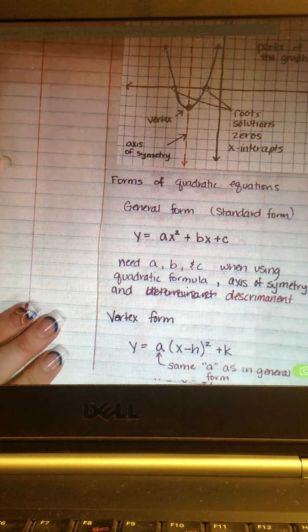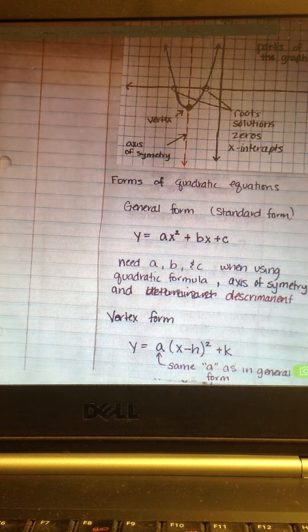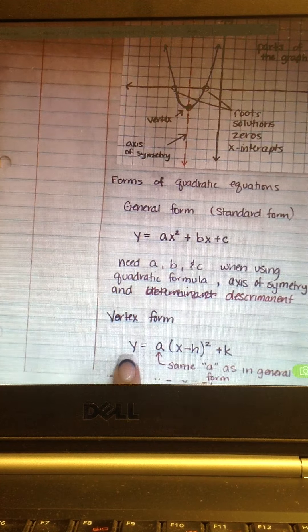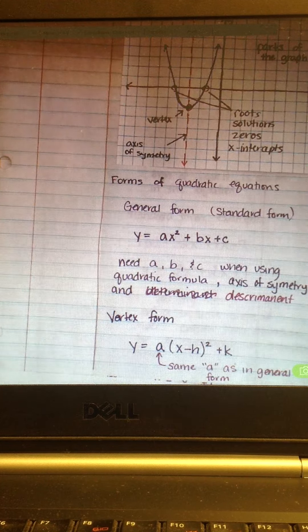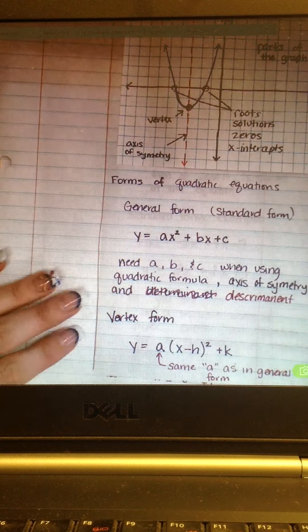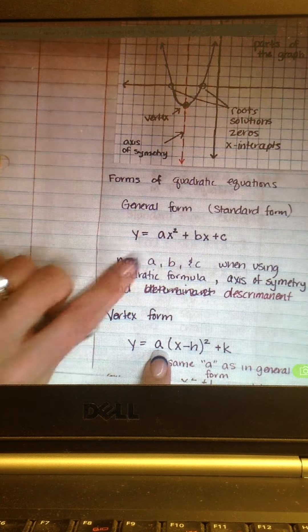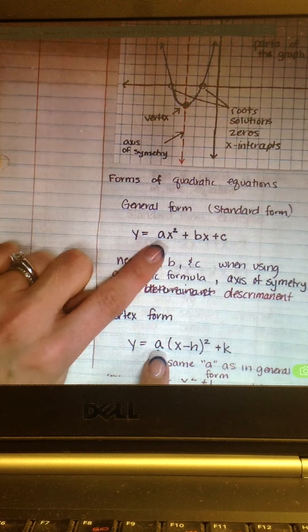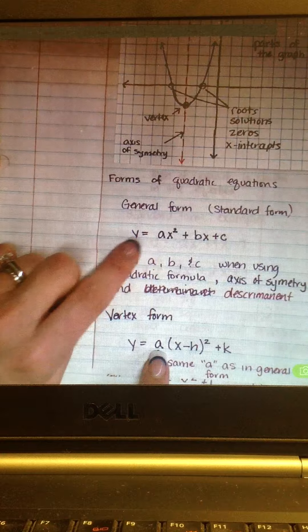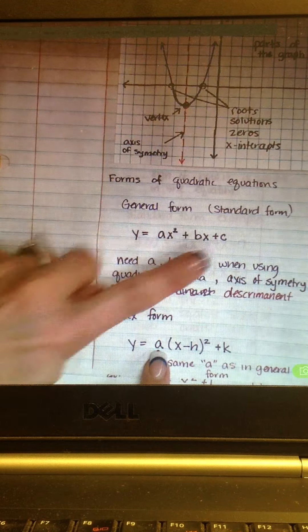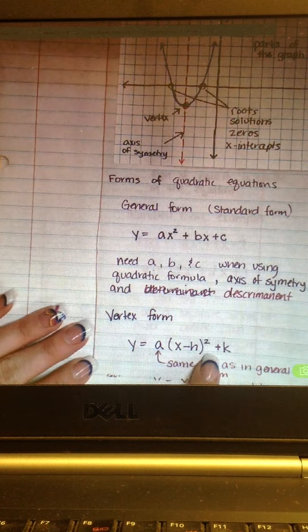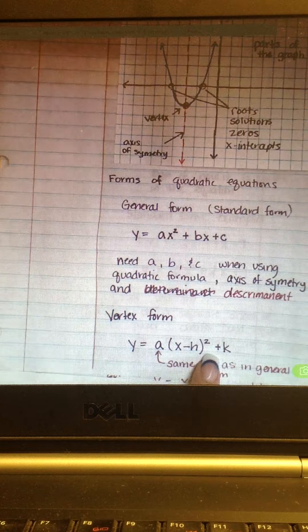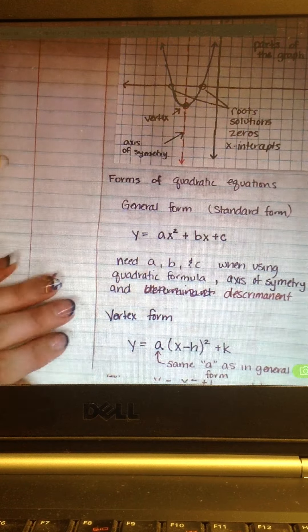I do not know why they picked the letters H and K, but I know it's not confusing with the X or the Y that's already there. And that may have something to do with it. This is the same A that we find up here in the general form. They used the same letter on purpose because it would be the exact same number. An equation can be written like this and can also be written like this and be the exact same equation, just written in two different forms.